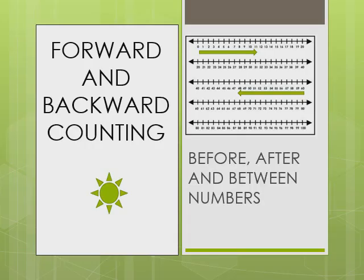Next topic is forward and backward counting. When we count 1, 2, 3, 4, 5, we go in forward direction, where every number is one more than the other number.